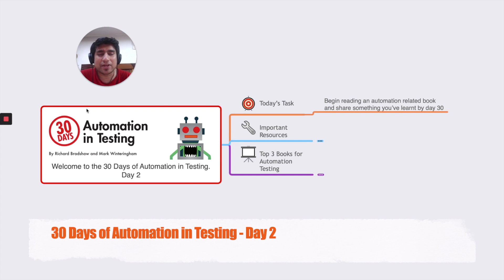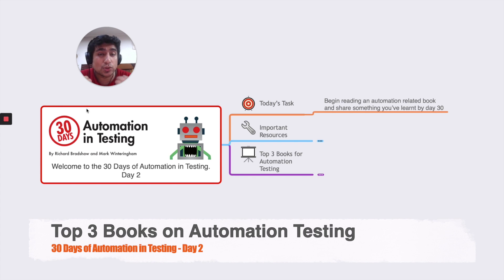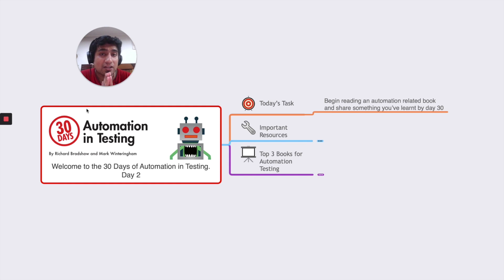Hey guys, welcome to Testing Academy. My name is Pramod, and welcome to the 30 Days of Automation in Testing. This is Day 2. In this video, I'm going to explain the top three books on automation testing — especially the testing part — that you should read as a QA professional. I'm also going to talk about why you should start reading books. Let's get started.